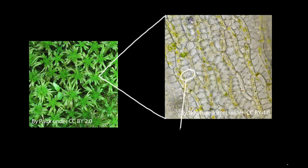Take this moss plant for example. If we zoom way in, we can see that it's actually made up of many smaller units. These units are cells.